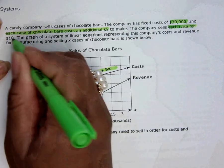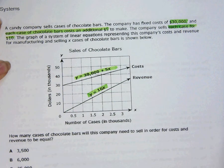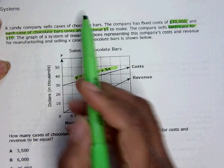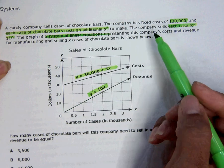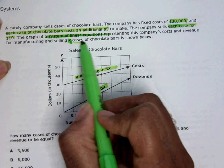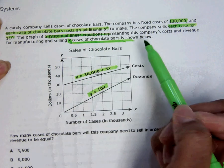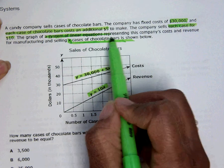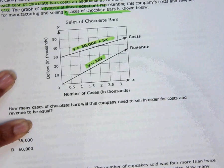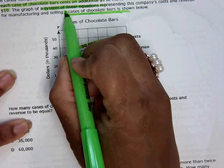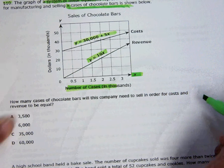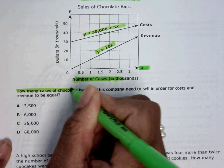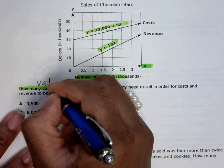Then it says the company sells each case for $10. The next important thing, let's keep reading. It tells you that you have a system of linear equations. My goodness, menu 3, 2, all day long. But what else is important? It says that the X represents the cases of chocolate. If X is the cases of chocolate bars, X is the number of cases. What does it mean right here? How many cases? It's asking for the value of X.